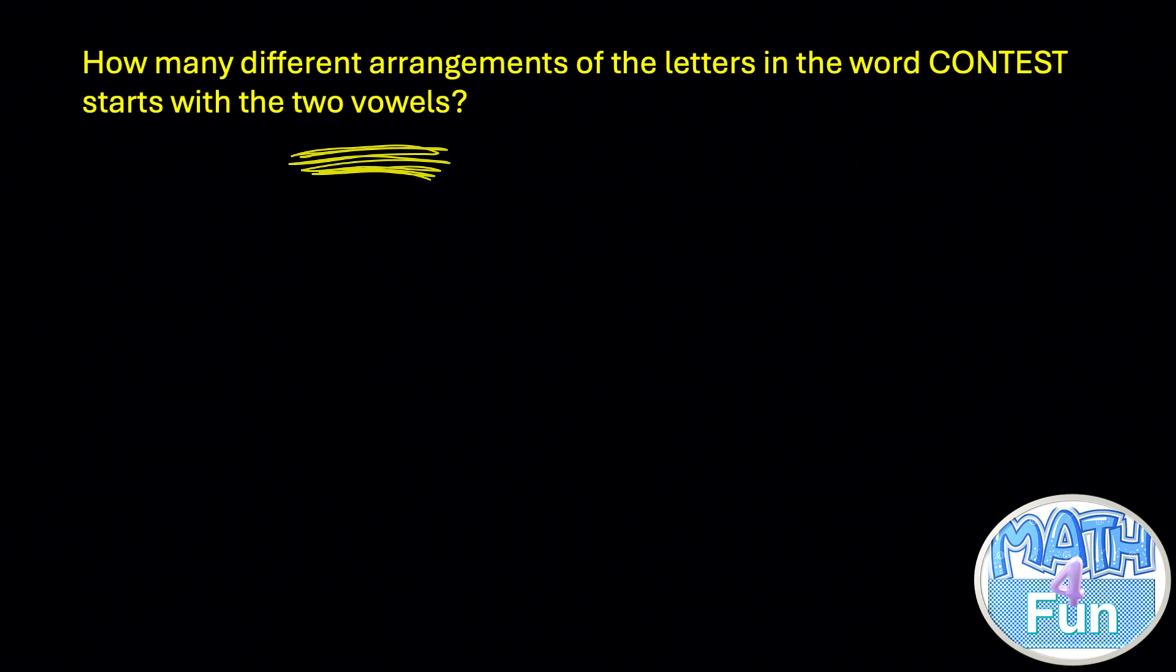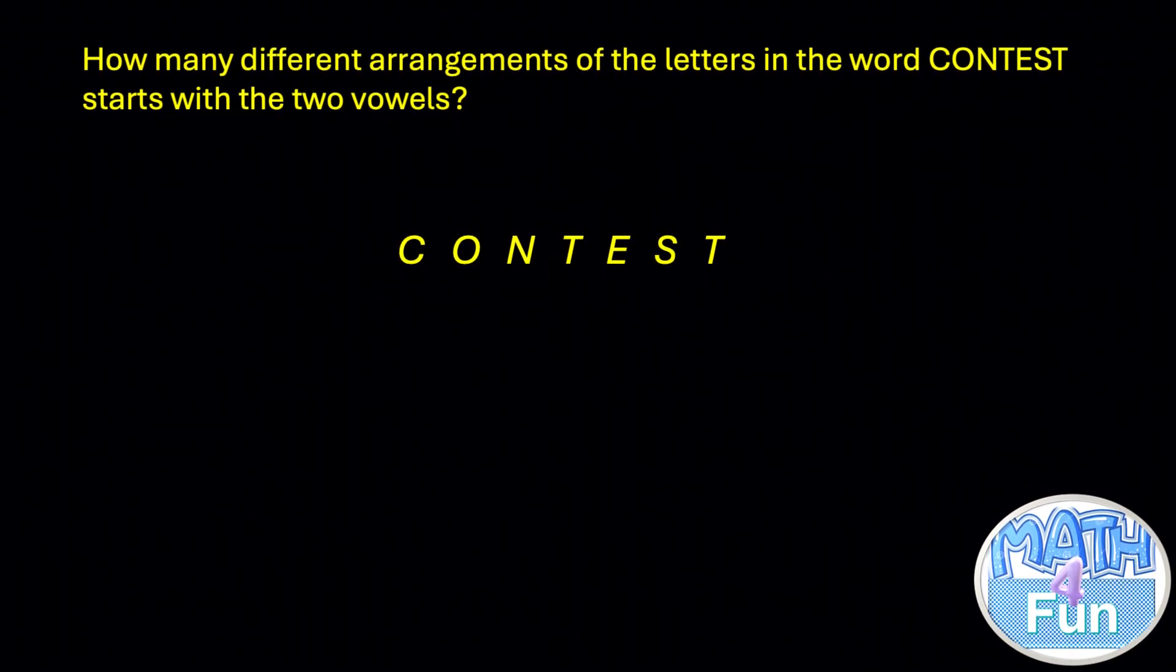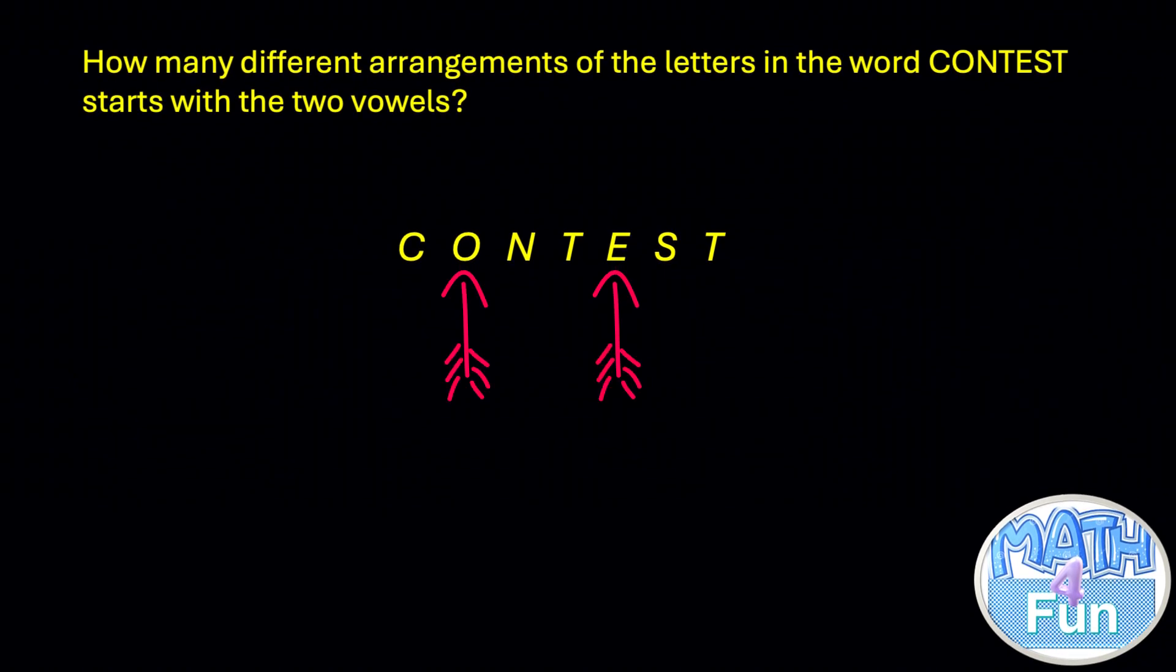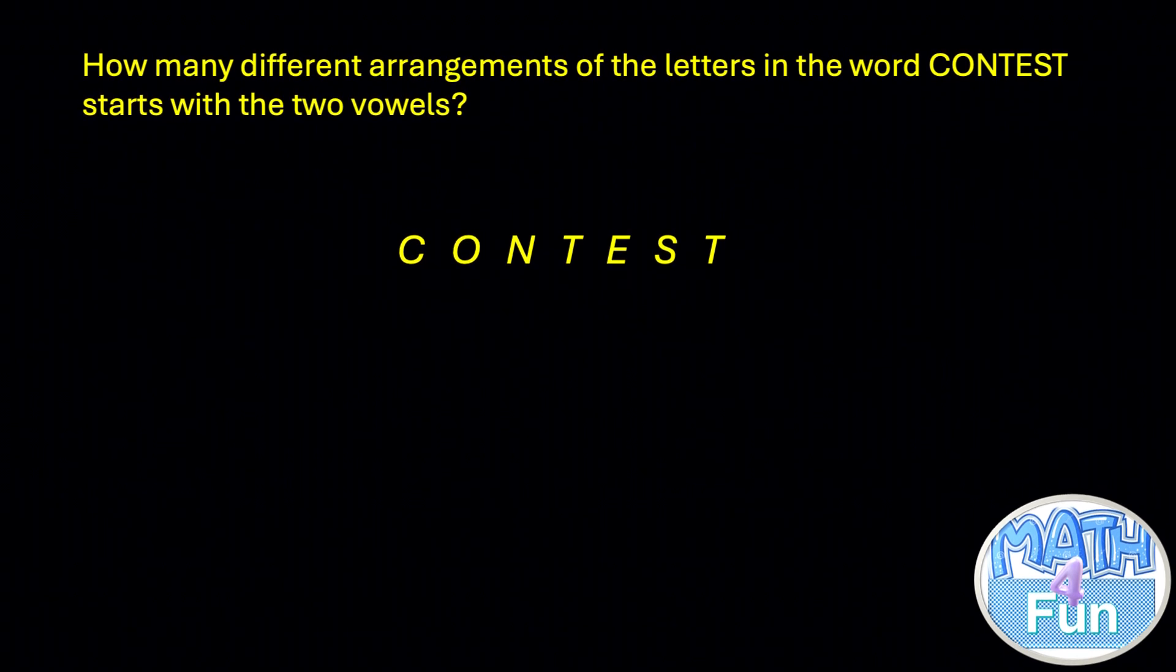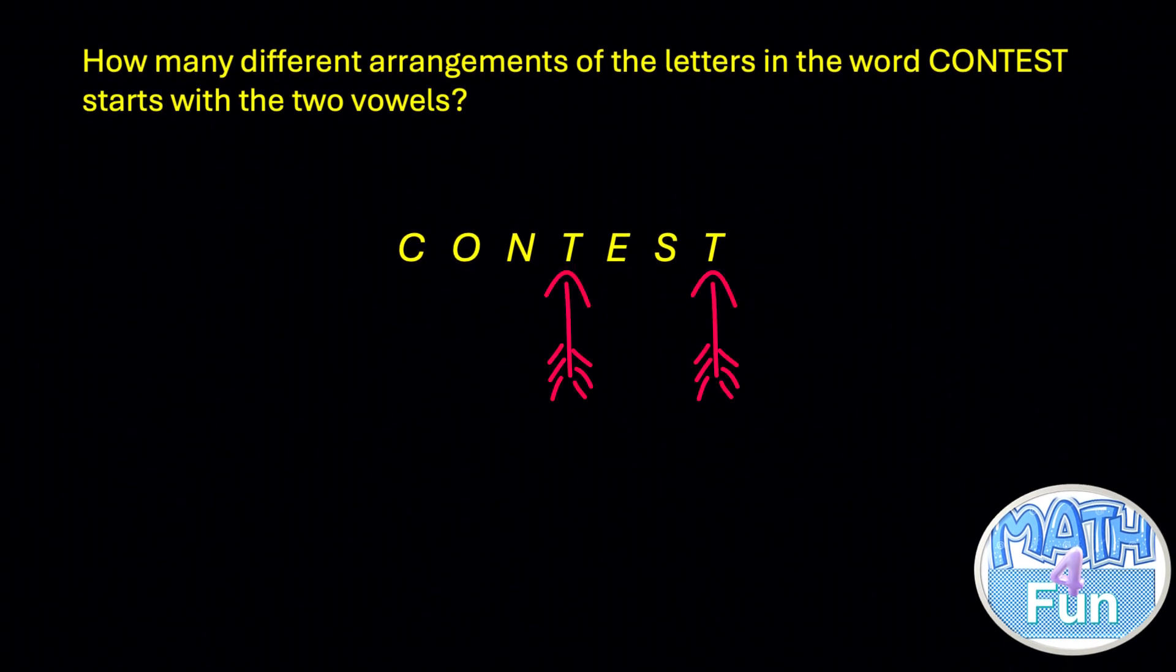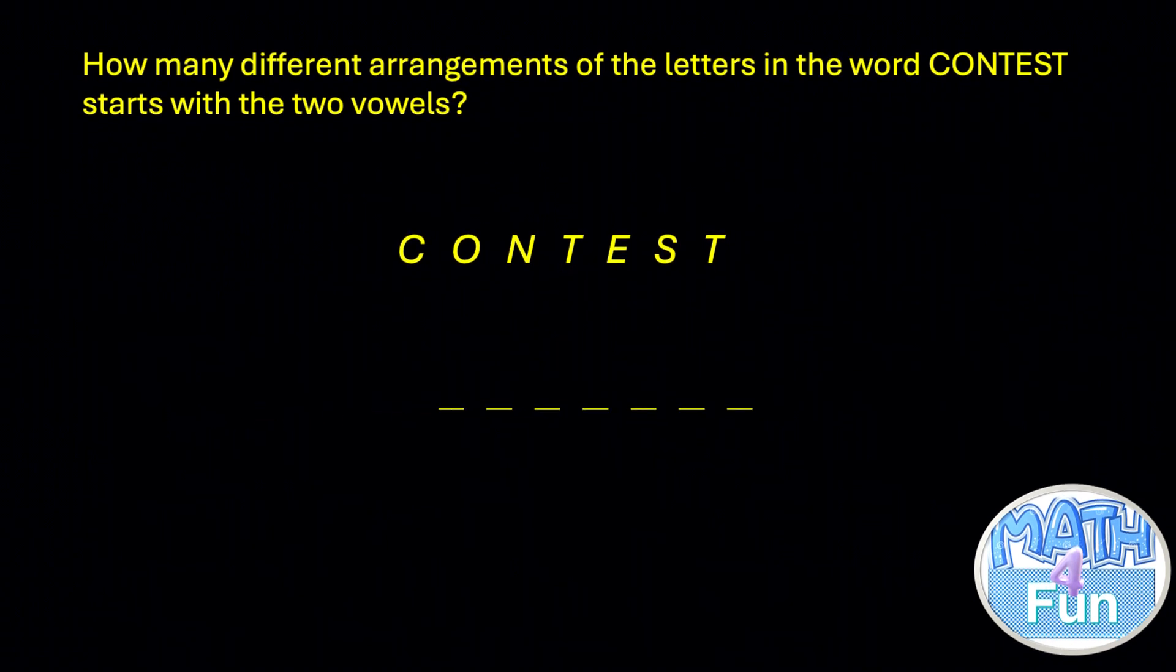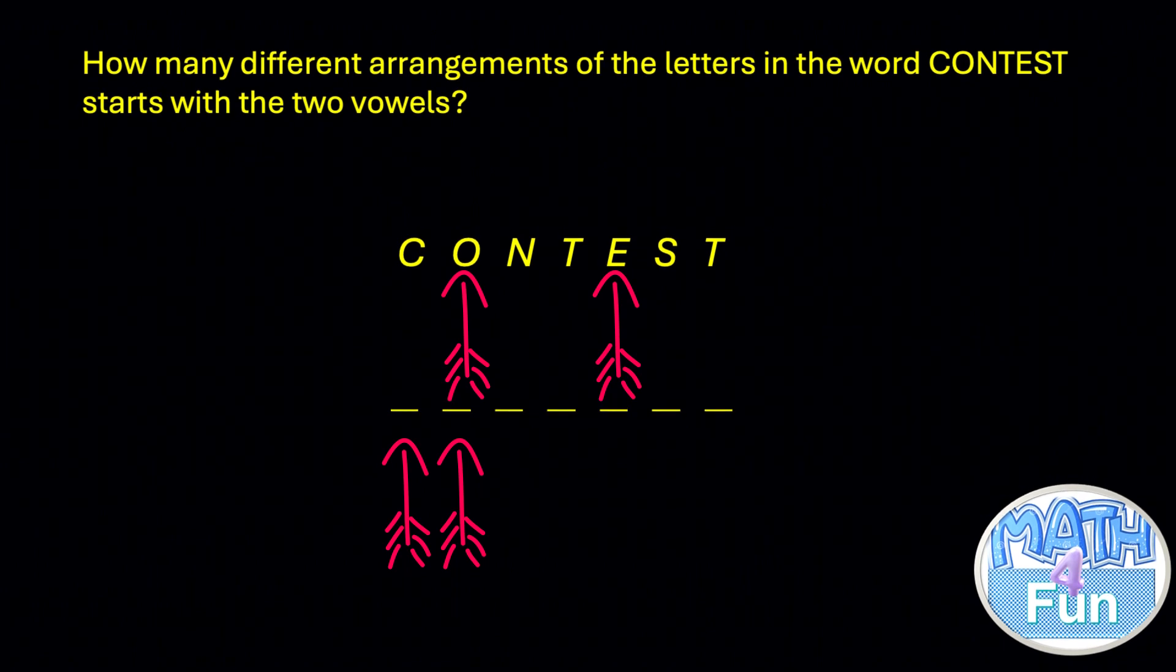To solve this problem, let's consider the word CONTEST. First, it has seven letters in total with two vowels O and E and five consonants C, N, T, S, and T. Look at T, it's repeated twice, right? Now for an arrangement to start with two vowels, the vowels must be in the first two positions.